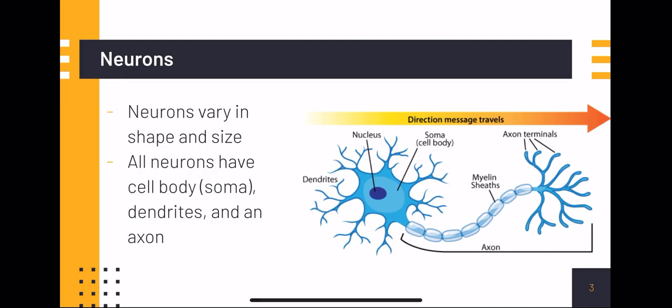Neurons vary in shape and size, but all neurons have a cell body, also known as a soma, dendrites, and an axon. Dendrites are seen on the left in the picture and they receive signals from other neurons. Axons is the structure in the middle going to the right, and axon terminals on the right send signals to other neurons.